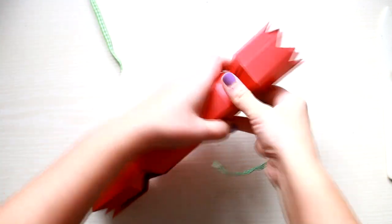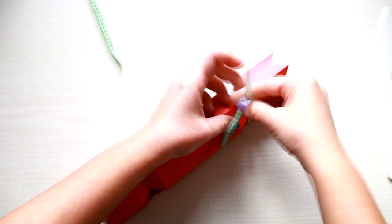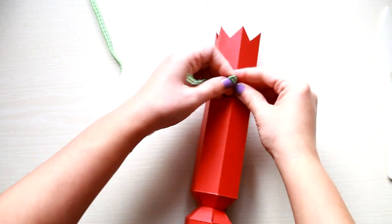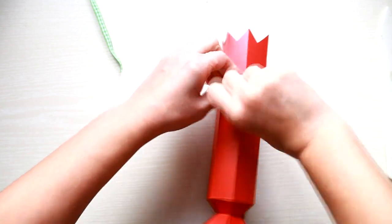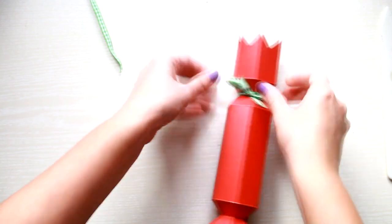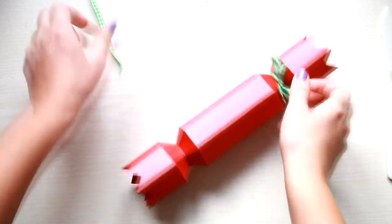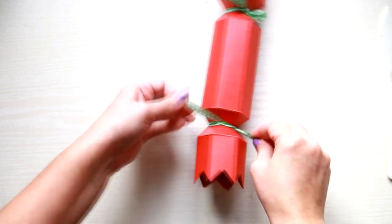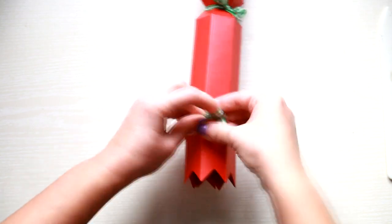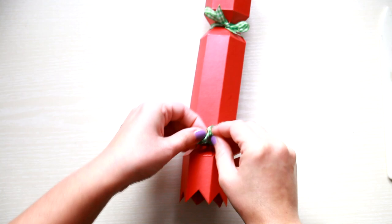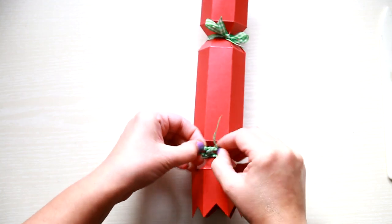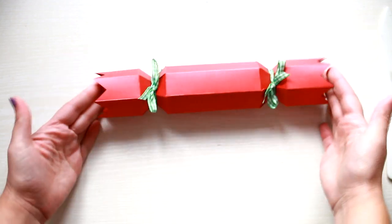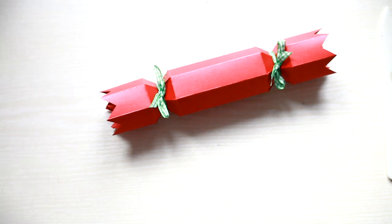Then take a piece of ribbon and tie a bow on each end of the box. And you're done. Now you can just embellish the box.